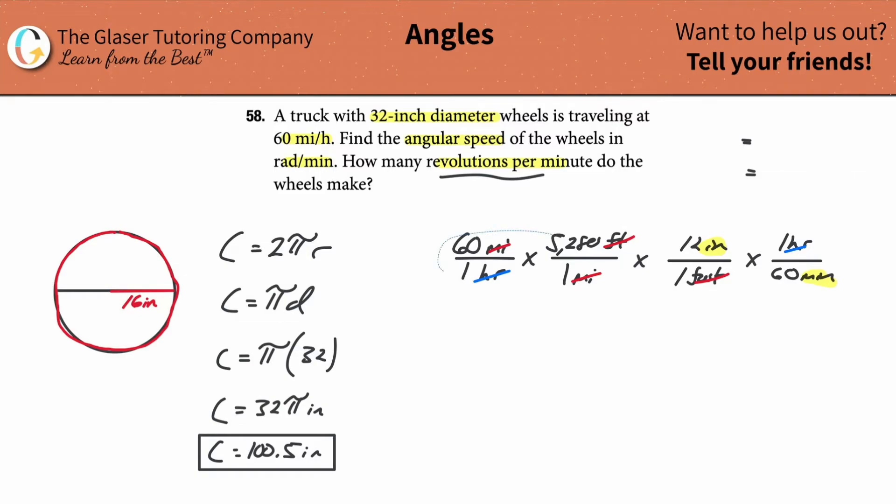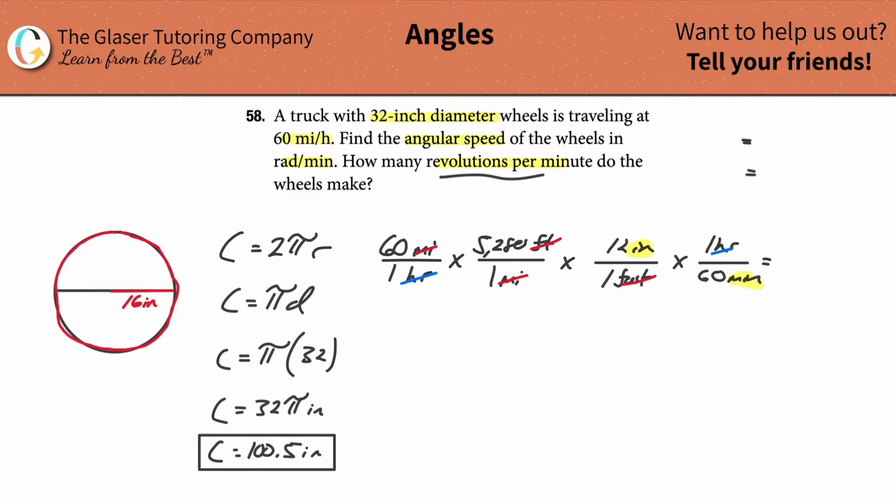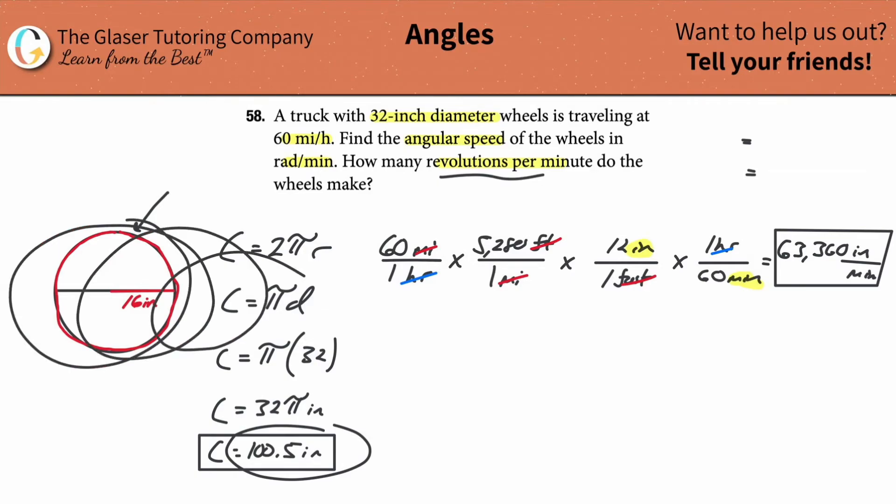So let's throw this into the calculator. This becomes 60 times 5,280 times 12, divided by 60. So this works out to be about 63,360 inches every single minute. That's how many inches the car is traveling per minute. Now, wait a minute. If that's the amount of inches the car is traveling every single minute, and you know that the length of this tire is 100 inches, then how many revolutions must the tire make in order to cover 63,360 inches in one minute?